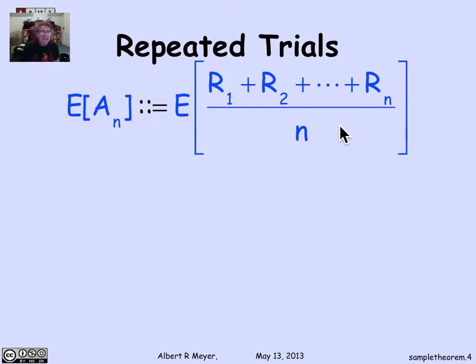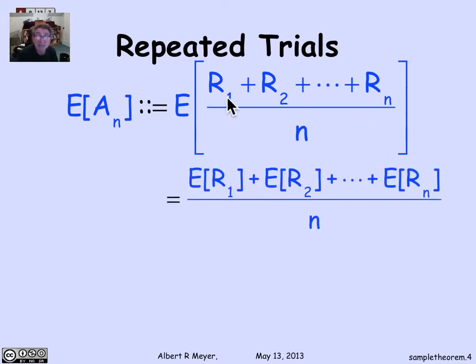Now, the first question to ask is, what is the expectation of the average? The expectation of the average is, by definition, the expectation of the sum of the r's over n. And by additivity of expectation, that's the sum of the expectation of each of the r's over n. But each of them has expectation mu. So the numerator is n mu, and the n's cancel. And sure enough, the average has the same expectation as each of the individual variables, each of the trials.